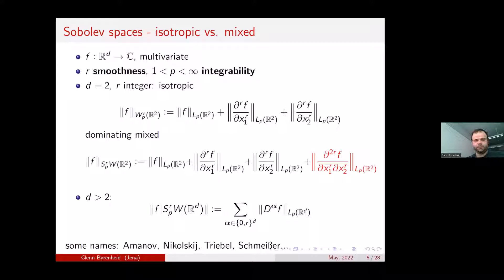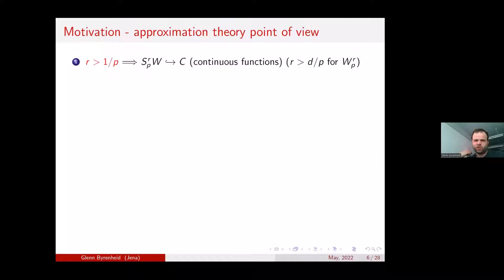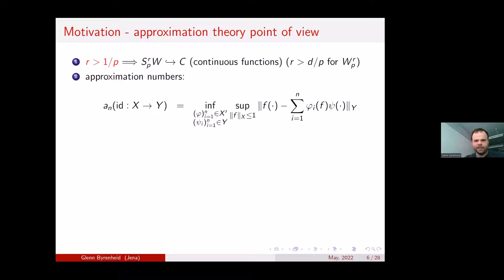From an approximation theory point of view, the key issue is always the dependence on the underlying dimension. The space of dominating mixed smoothness has the property that it requires r > 1/p for continuous embedding into the continuous functions — with no dimension dependence — whereas classical isotropic Sobolev spaces require r > d/p. For approximation numbers: if X and Y are Banach spaces with X compactly embedded in Y, the n-th approximation number is the error of approximating functions from the unit ball of X by linear algorithms — linear combinations of n fixed linear functionals — measured in Y.